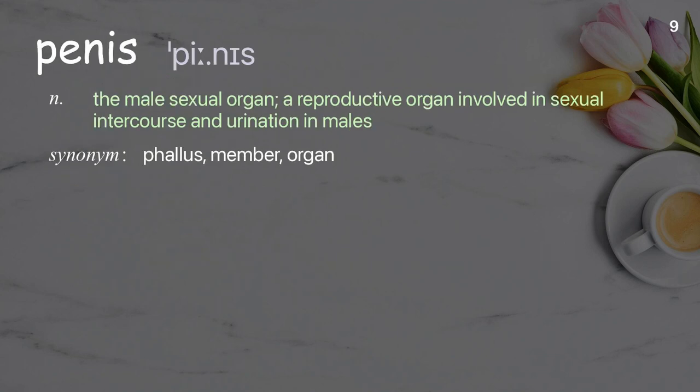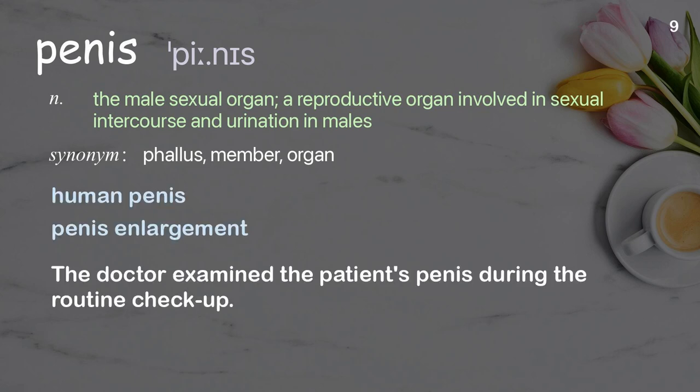Penis: the male sexual organ, a reproductive organ involved in sexual intercourse and urination in males. Examples: human penis, penis enlargement. The doctor examined the patient's penis during the routine checkup.